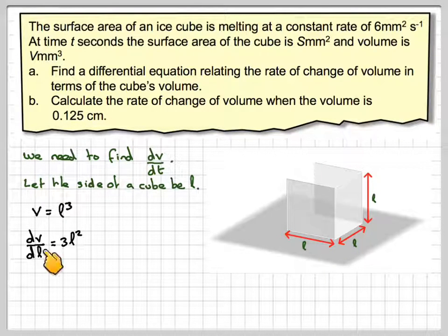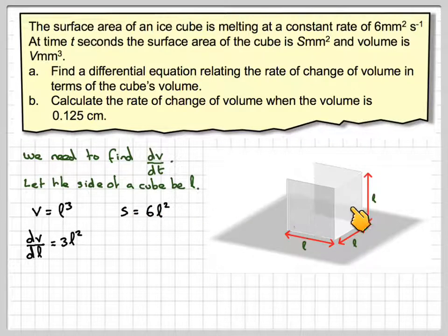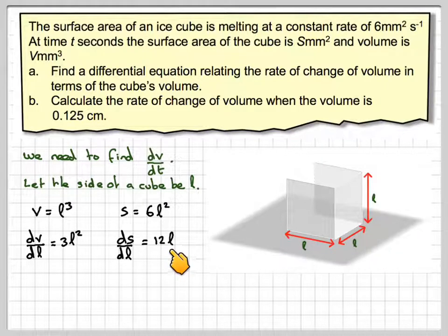Then from that, we can say the volume of a cube is L³. So dv by dL, if we differentiate this, will be 3L². And s will be 6L². So the surface area, there's six faces, and each face is L times L. So there's six of them, so it'll be 6L². And if we differentiate that, we're going to get 12L. So we want to find dv by dt.